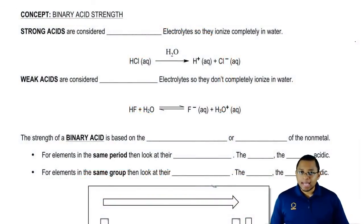We've already learned that there are two major classes of binary acids. There are our oxy acids and then there are our binary acids. Now, why is it so important to know the strength of them?